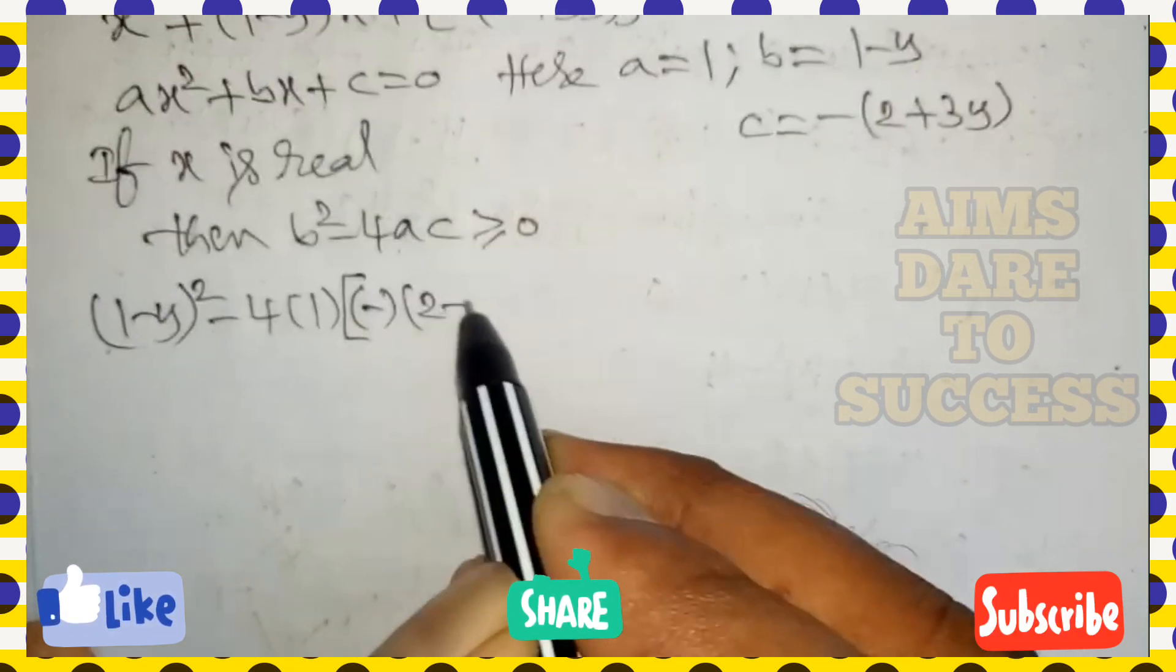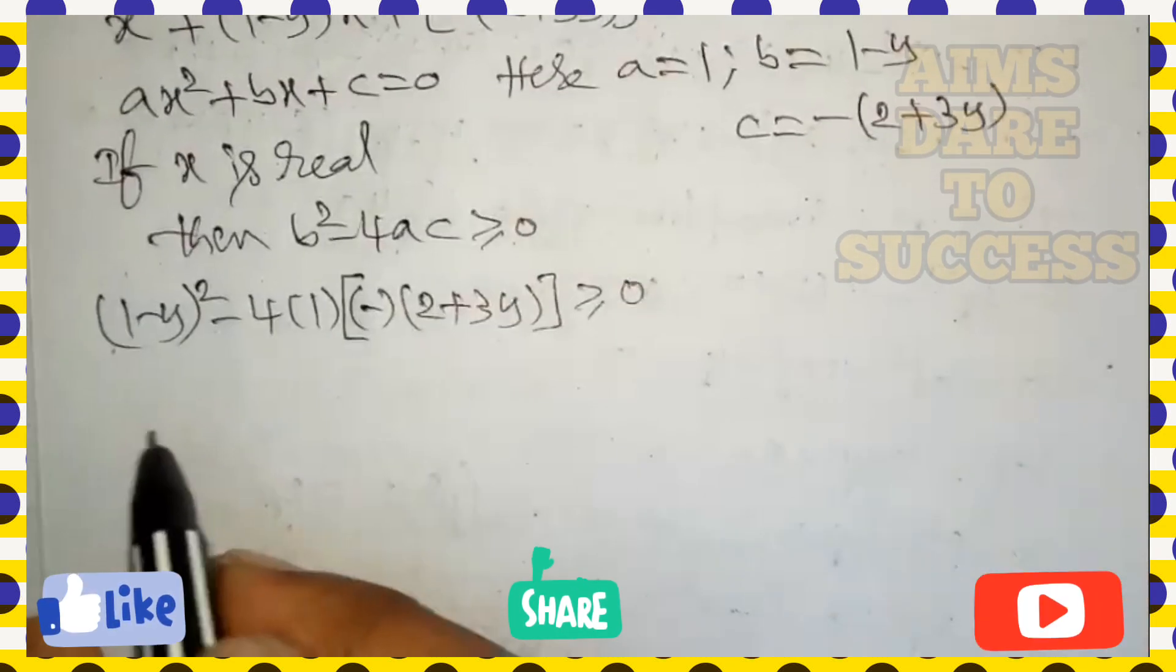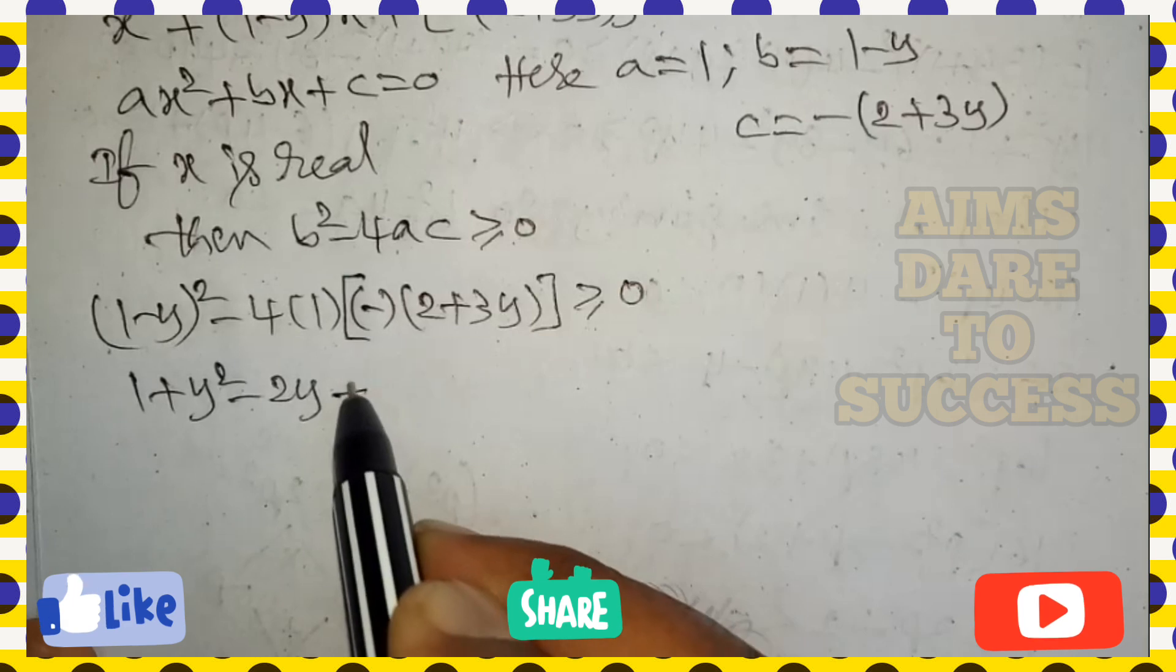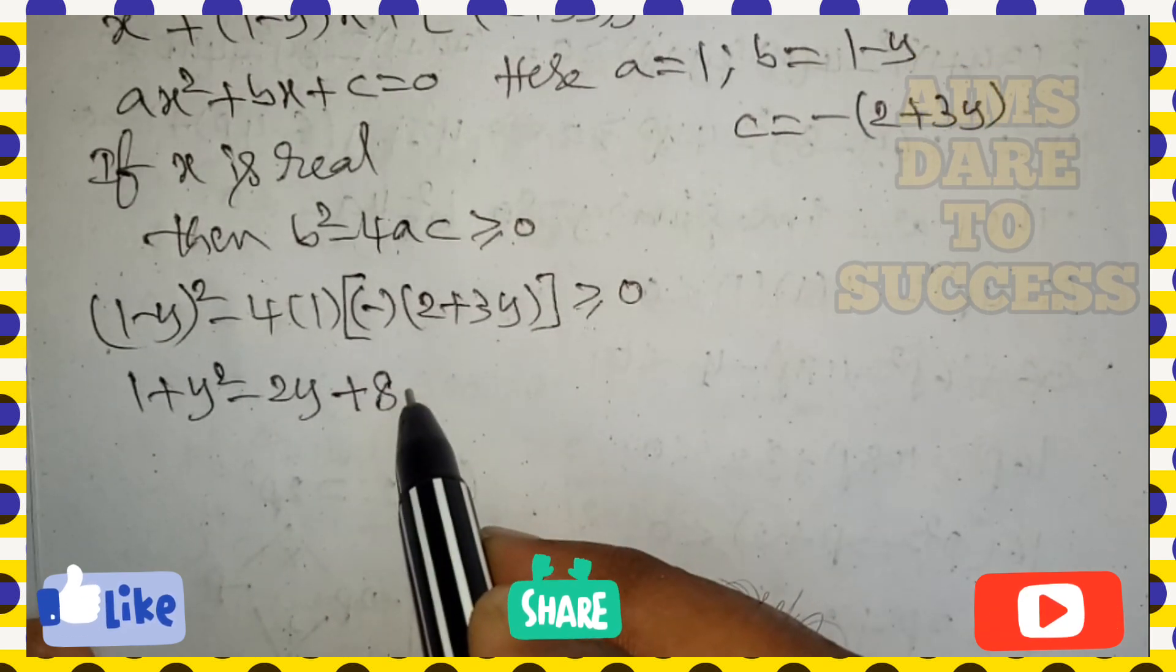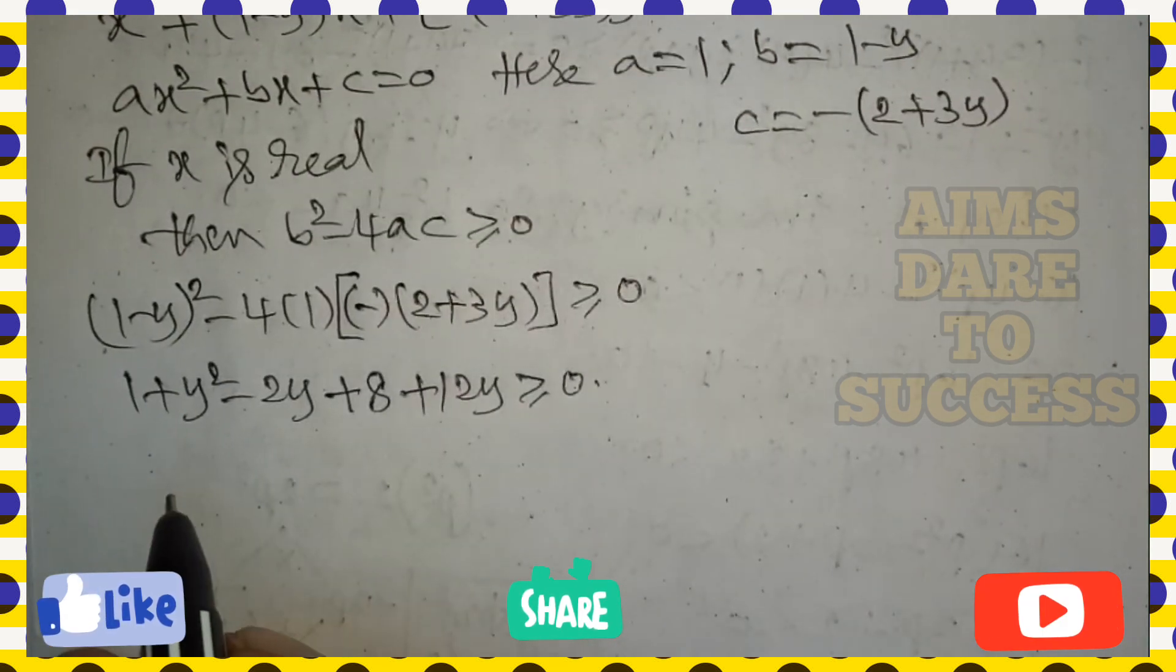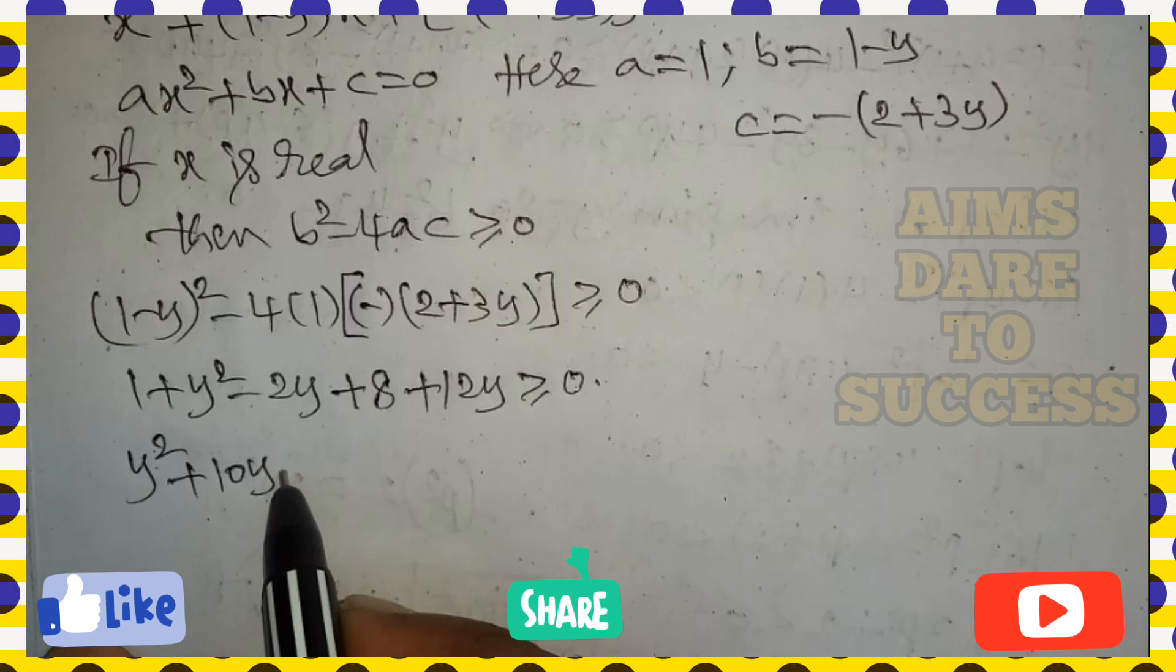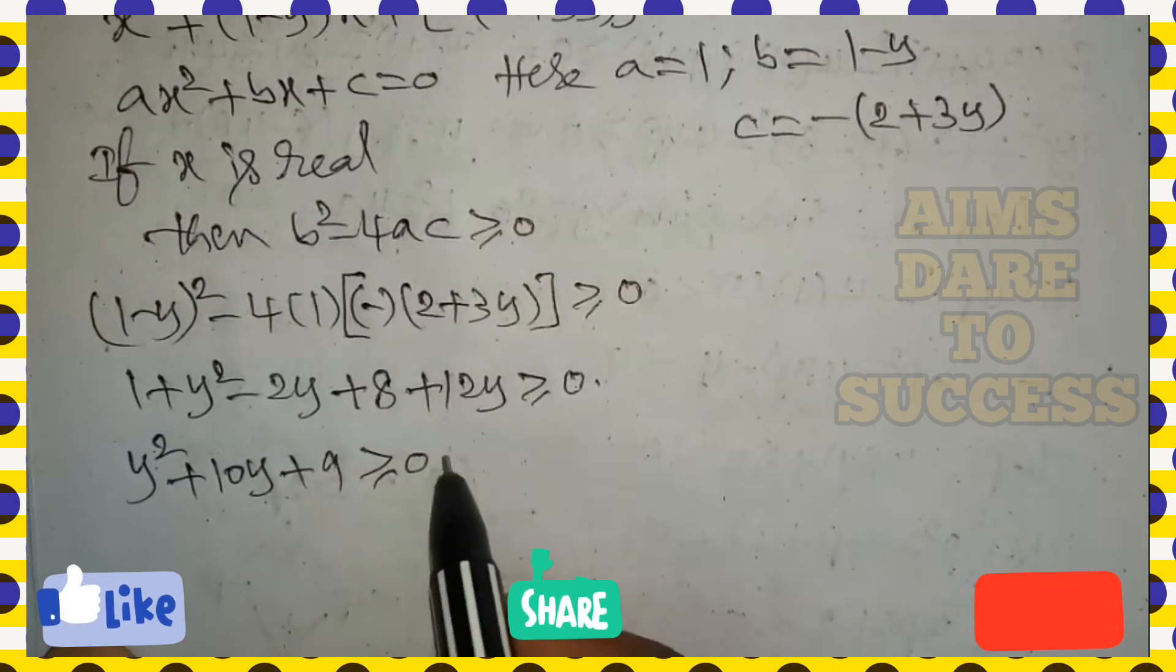a minus b whole square formula: a square plus b square minus 2ab. So (1-y) whole square is 1 square plus y square minus 2y. Minus 4 multiply inside: we get minus of minus plus 4 into 2 is 8, minus of minus plus 4 into 3y is 12y, greater than or equal to 0. y square as is, 12y minus 2y is 10y, 1 plus 8 is 9, greater than or equal to 0. So this is a quadratic expression.